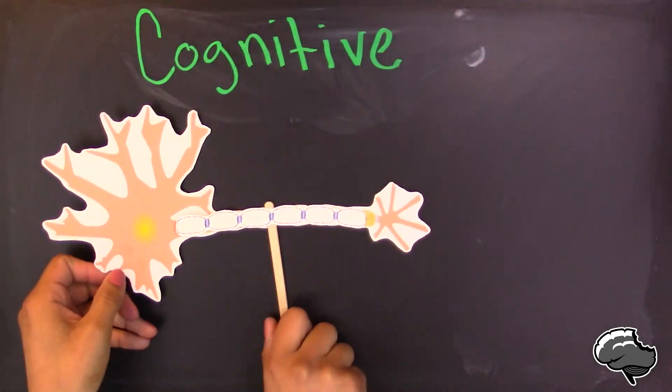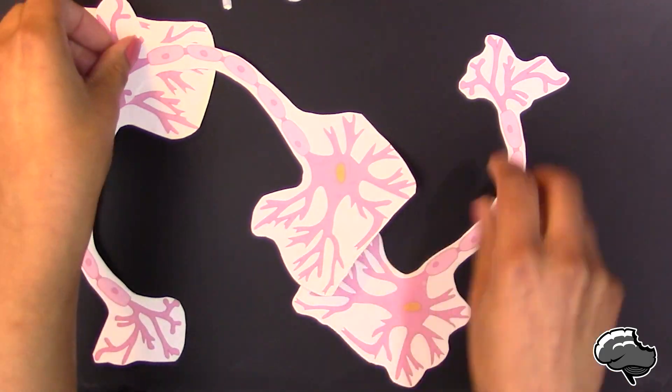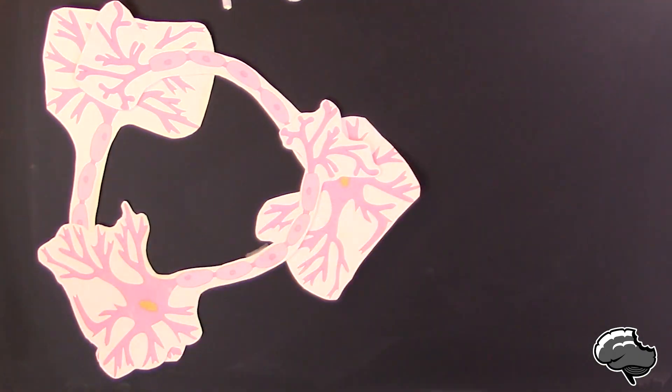Thus, it may be white matter changes that best account for cognitive changes seen in later adulthood. Although, researchers argue that documented cognitive changes cannot all be explained by brain changes alone, which is weird. Isn't that weird? That's weird. Nevertheless, some areas of cognitive decline have been well documented.